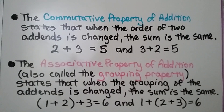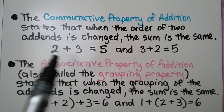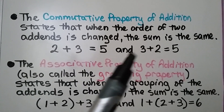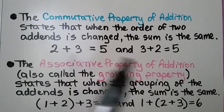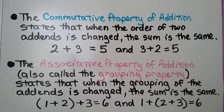The commutative property of addition states that when the order of two addends is changed, the sum is the same. So 2 plus 3 is equal to 5, and 3 plus 2 is equal to 5. It doesn't matter the order of the addends.